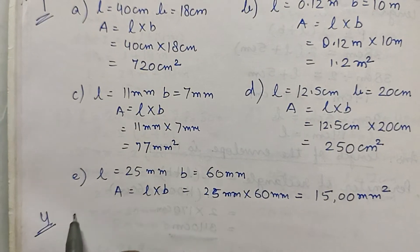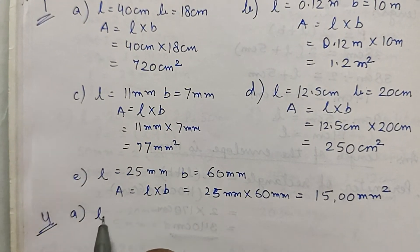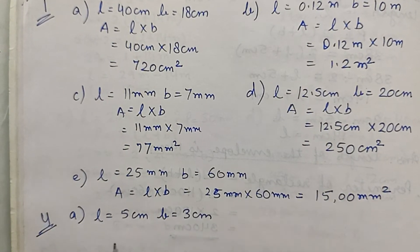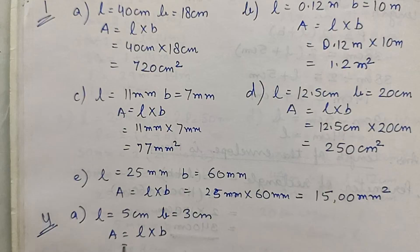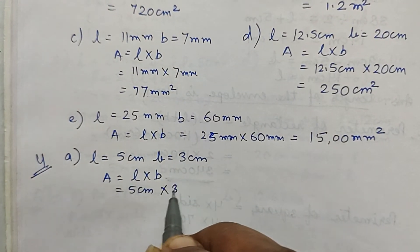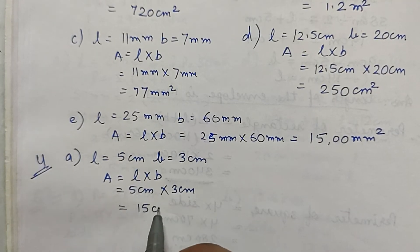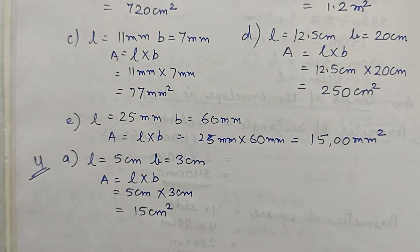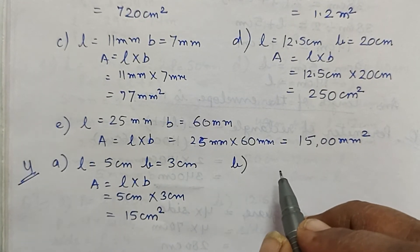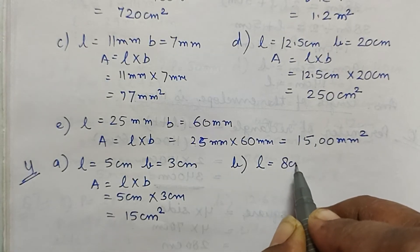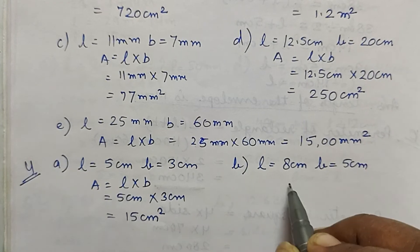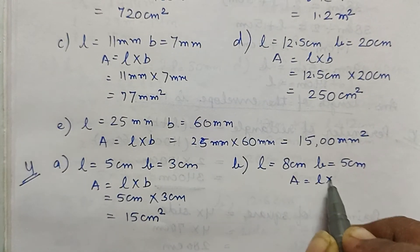Part a: length is 5 centimeter and breadth is 3 centimeter. Area is L × B, so 5 cm × 3 cm is equal to 15 centimeter square. Part b: length is 8 centimeter and breadth is 5 centimeter. Area is equal to L × B.